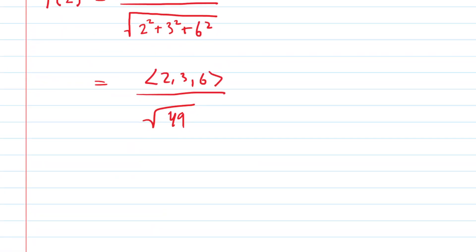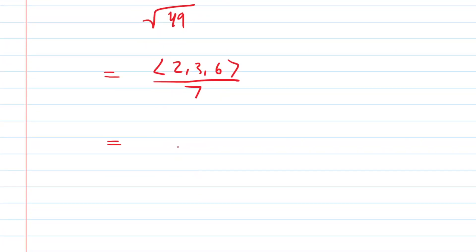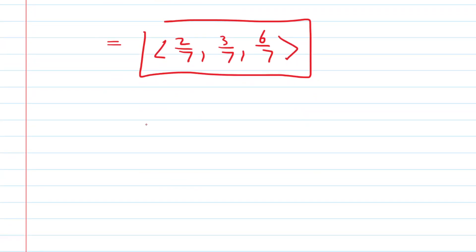Square root of 49, of course, is 7. So now all we need to do is divide each component by 7. So our final answer for the unit tangent vector is 2/7, 3/7, 6/7. This is the correct answer to the question. Those are the x, y, and z components of the unit tangent vector.